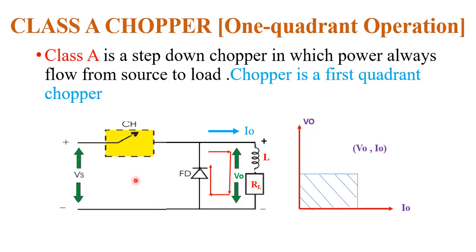This is the circuit diagram of class A chopper. Here we use VS as the supply voltage at the input side. A chopper is a high-speed semiconductor switching device. For the chopper we can use any high-speed switching device such as BJT, power MOSFET, GTO, or SCR. There is one freewheel diode, and at the load side we use an inductor and load resistance RL, where we collect the output voltage.